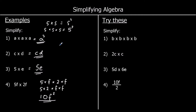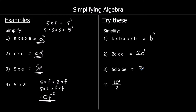Question 1: b times b times b times b is b to the power of 4. Question 2: 2 times c times c — c times c makes c squared, and 2 times that gives us 2c squared. Question 3: 5d times 6e — we can do 5 times 6 which is 30, and we've got 30 times d times e, so without times signs it's 30de.